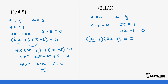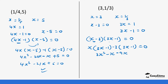We use this to expand: x into bracket (3x minus 1), then minus 3 into bracket (3x minus 1), equals 0. So this gives us 3x squared minus x minus 9x.